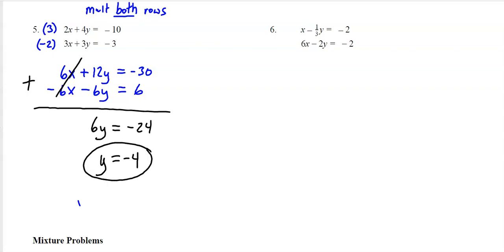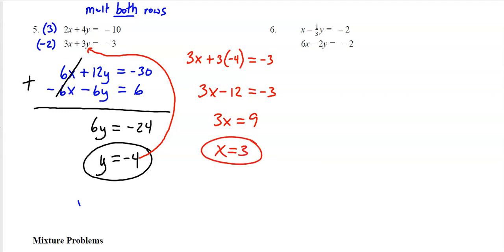Be careful because sometimes kids do this part right but substitute into the wrong spot. Remember, I'm plugging in for y. I'm going to take that negative 4 and put it there. So 3x plus 3 times negative 4 equals negative 3. That's 3x minus 12 equals negative 3. Add 12 to both sides, 3x equals 9, divide, and I get x equals 3. Now I'm all set to write my final answer, 3 comma negative 4. That one I had to multiply both rows, so it was tougher. Had to come up with two totally new equations.